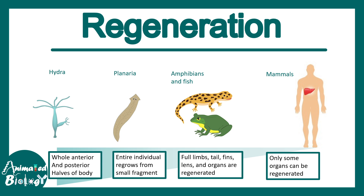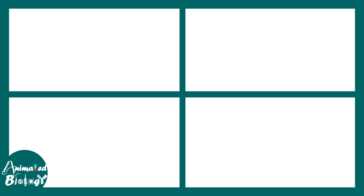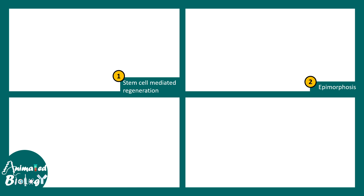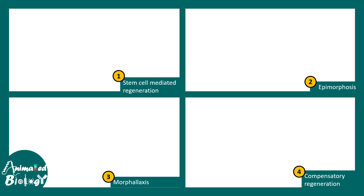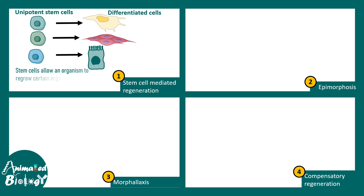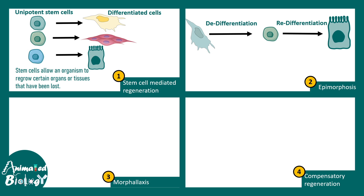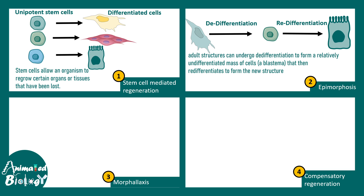There are four mechanisms by which regeneration can possibly happen: stem cell-mediated regeneration, epimorphosis, morphallaxis, and compensatory regeneration. In stem cell regeneration, dedicated stem cells regrow differentiated cells. In epimorphosis, dedifferentiation happens and a transient structure called the blastema forms, which then undergoes redifferentiation. Today's focus is on morphallaxis.